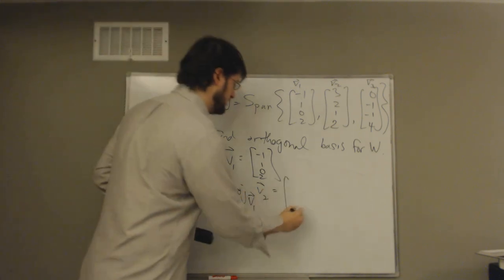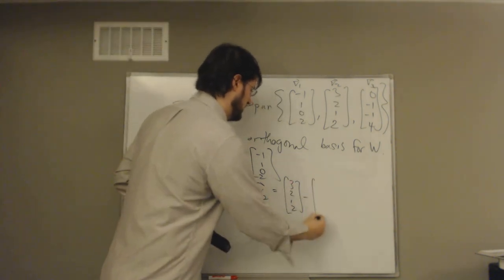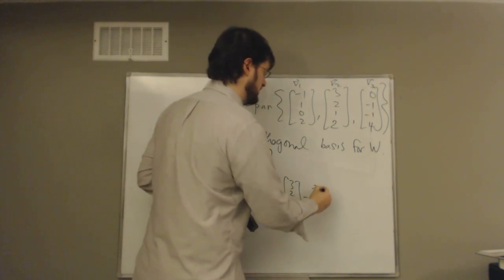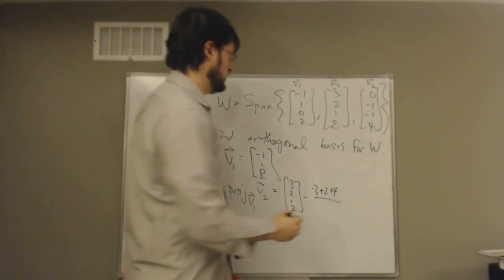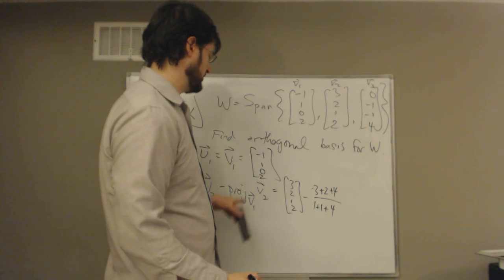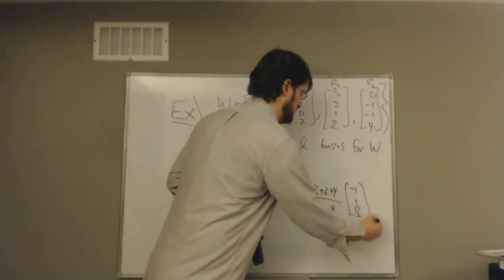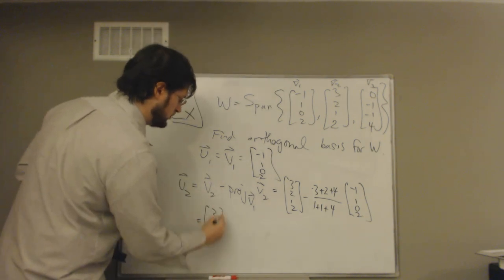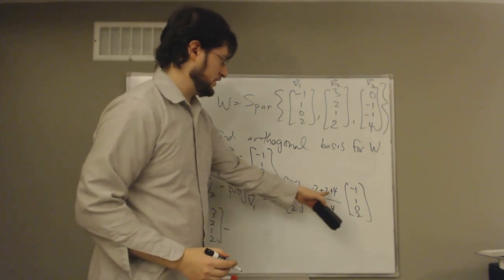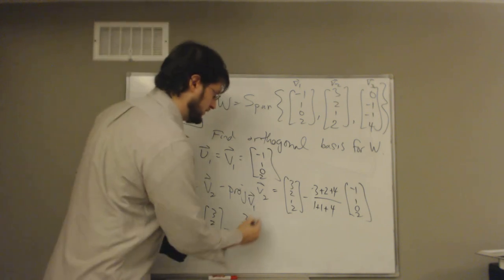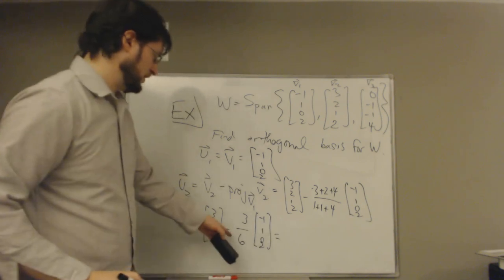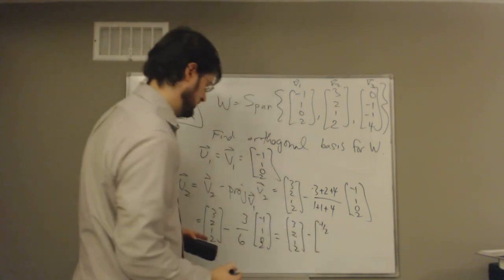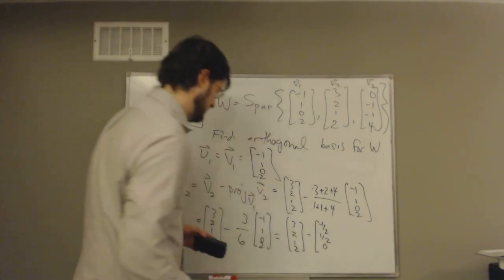Computing U2: V2 = (3, 2, 1, 2). The dot product V2 · V1 = −3 + 2 + 0 + 4 = 3, and V1 · V1 = 1 + 1 + 0 + 4 = 6. So U2 = (3, 2, 1, 2) − (3/6)(−1, 1, 0, 2) = (3, 2, 1, 2) − (1/2)(−1, 1, 0, 2). This gives (7/2, 3/2, 1, 1).